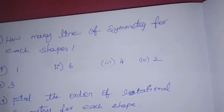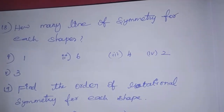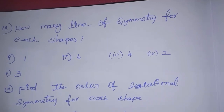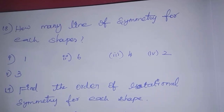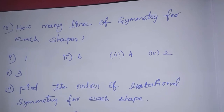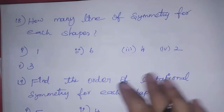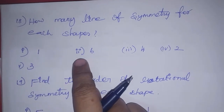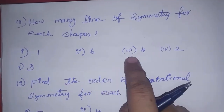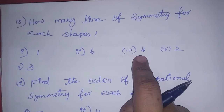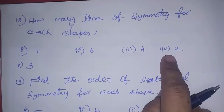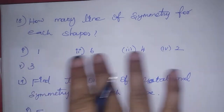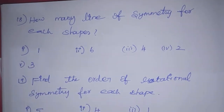Next one is the 18th sum: how many lines of symmetry for each shape? You can draw the diagram in the workbook. First subdivision: one line of symmetry. Second diagram: six lines. Third subdivision: four lines of symmetry. Fourth subdivision: two lines of symmetry. Fifth subdivision: three lines of symmetry. Now compare the diagram.